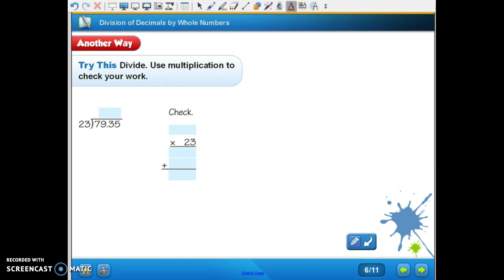Here's try this down at the bottom of your page. It says use multiplication to check your work. Twenty-three, how many twenty-threes in seventy-nine? Four. Let's see if we can do that. Twenty-three times four, that's ninety-two, so that's a little bit big. So let's do twenty-three times three, which is sixty-nine. So I can say one here and go sixty-nine.